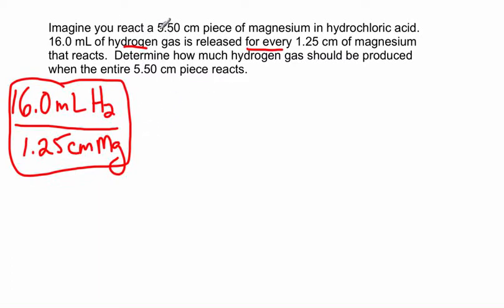Now let's reread the problem. It says, imagine you react a 5.5 centimeter piece of magnesium. So this is what we're going to start with. The piece of magnesium. We want to figure out how much hydrogen gas should be produced.